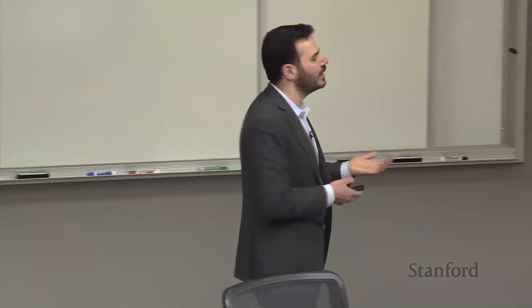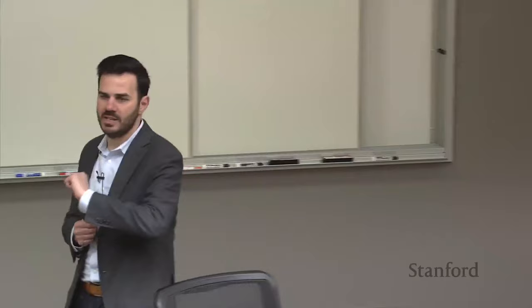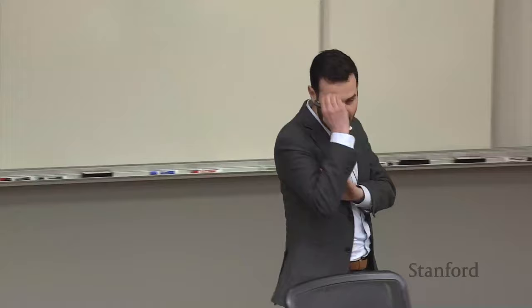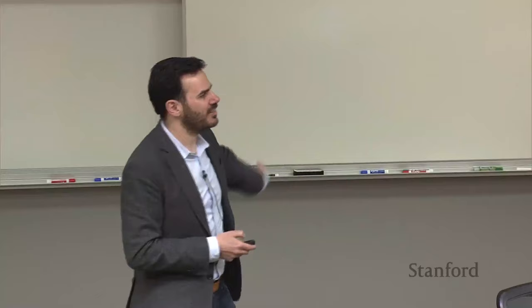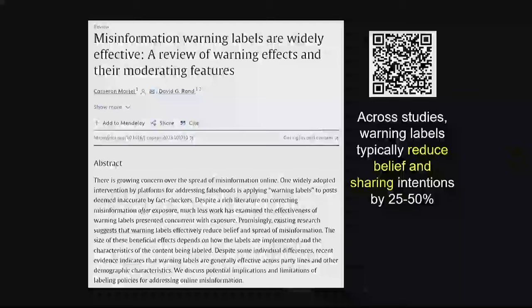There has been a lot of public concern and pressure on technology companies to reduce the spread of misinformation, and a lot of academic research on what to do about it. The current state of the art involves two main things: identifying claims that are false or misleading using professional fact-checkers and machine learning classifiers, and then either demoting content in the newsfeed or putting warning labels on it.